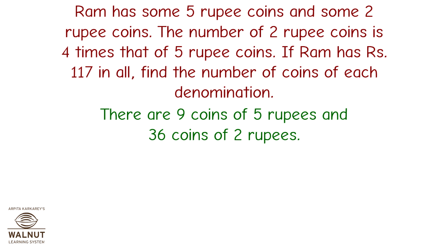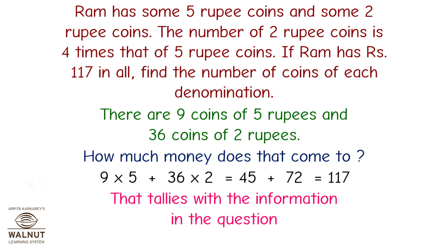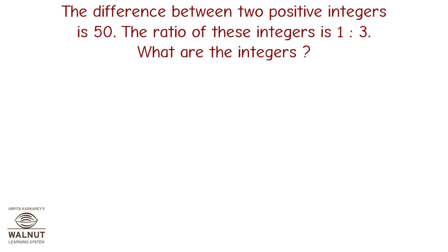There are 9 coins of 5 rupees and 36 coins of 2 rupees. To check: 9 into 5 plus 36 into 2 equals 45 plus 72, which equals 117. That tallies with the information in the question, so our answer is correct.